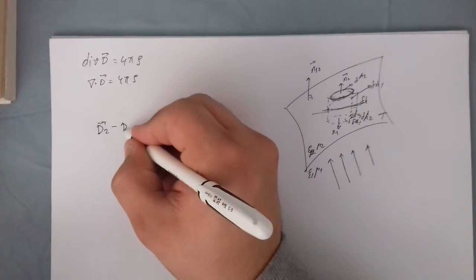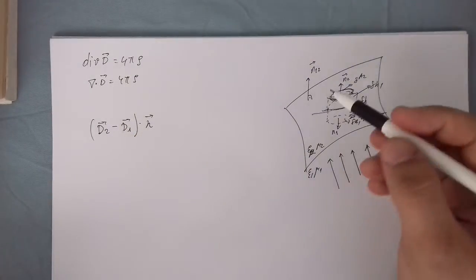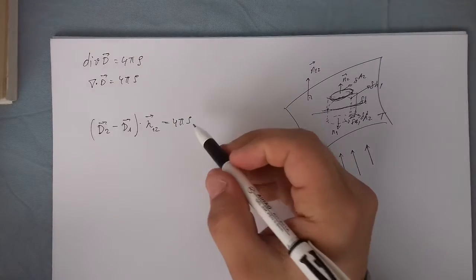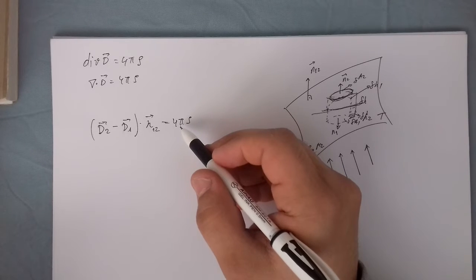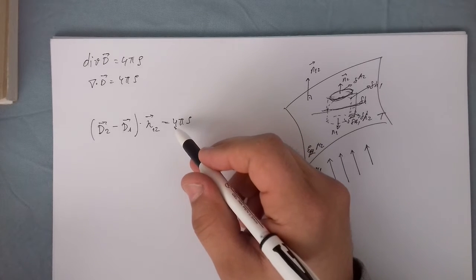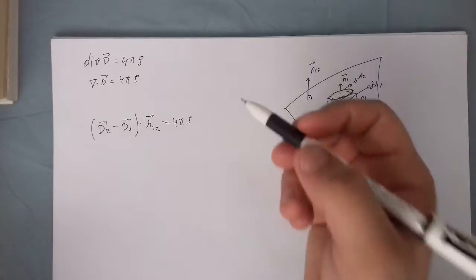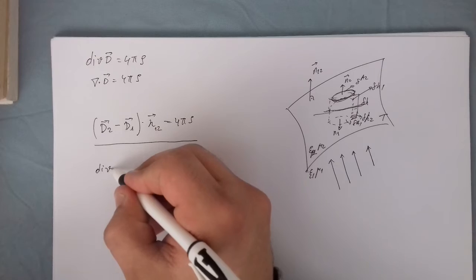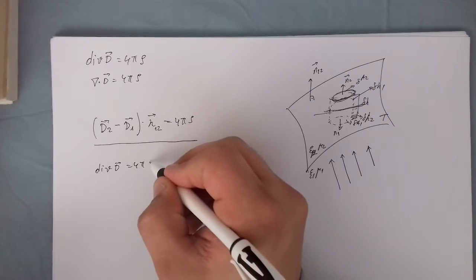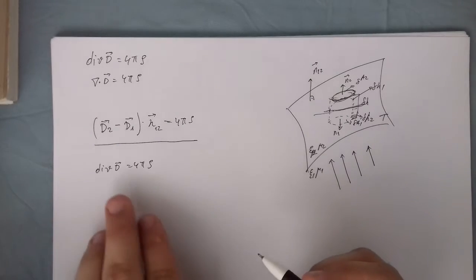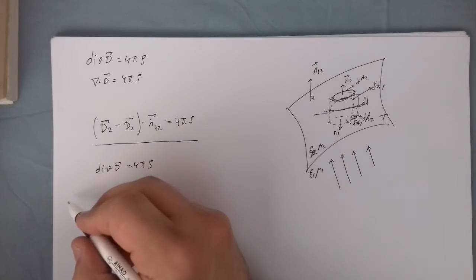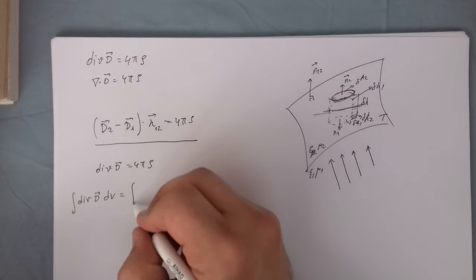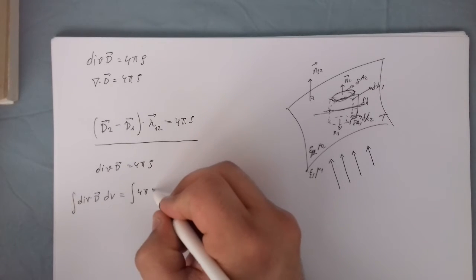So how do we prove that D2 minus D1 times N — in this case N1-2 — equals 4 pi sigma? Remember, I am using the CGS system of units, so if you don't use CGS you don't need the 4 pi constant. The divergence of D equals 4 pi rho, and I am going to integrate this equation over the volume: the integral of divergence of D over volume equals 4 pi times the integral of rho dV.